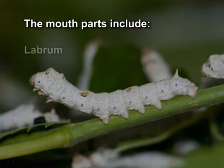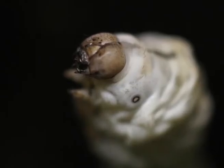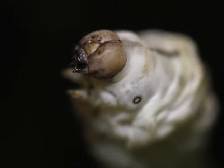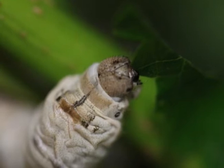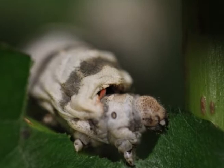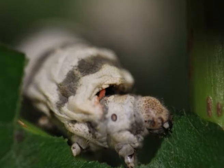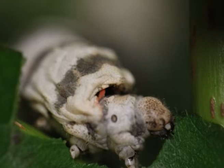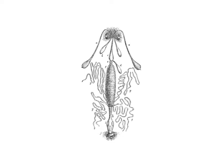The mouth parts include labrum, mandibles, maxillae and labium. The labrum is an unsegmented projection of the anticlypeus which forms the upper lip. The mandibles are paired appendages of the fourth cephalic segment. They are toothed and chitinized, lie in the mouth cavity, and serve to cut mulberry leaves by a side-to-side action like the blades of scissors. The duct of the salivary glands opens at the base of the mandibles.